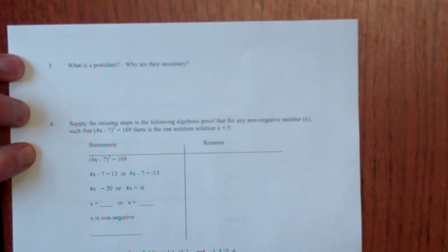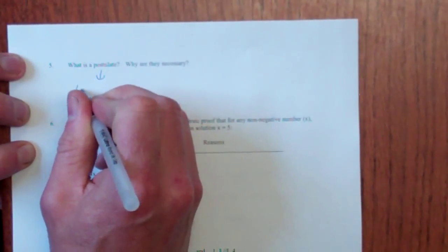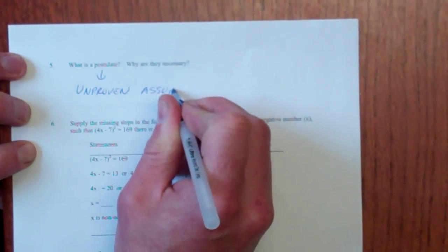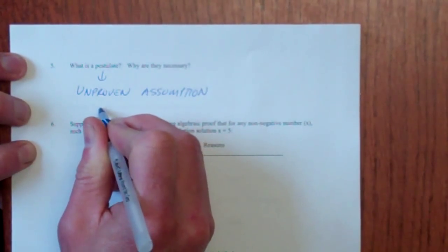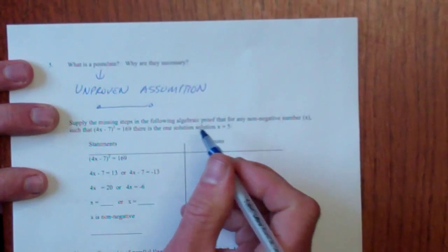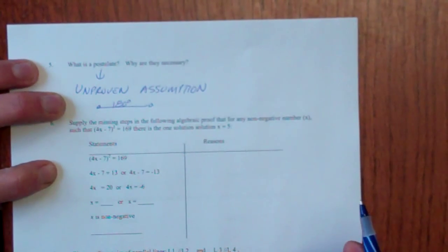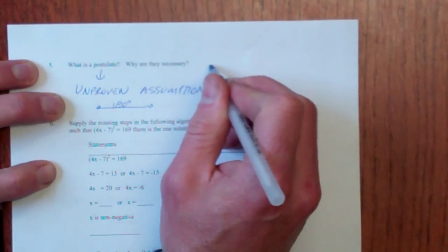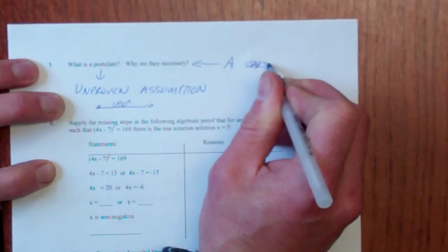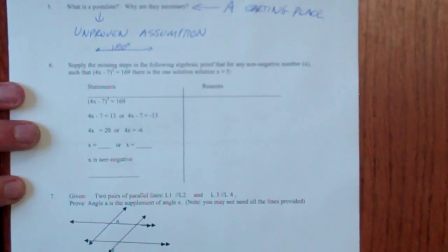Alright. For this one, what is a postulate and why are they necessary? It's boring to watch me write. Alright, postulates are unproven assumptions. Okay, that's like two points determine one unique line. Alright, or that a straight line has 180 degrees. There are all sorts of postulates. Look some of them up in the book. They're necessary because we need a starting place. And again, I'm going to go quickly. You can look that up in the book. You don't need to watch me write it all out.